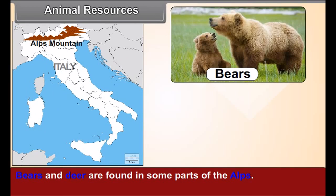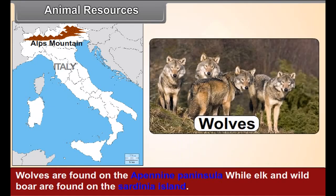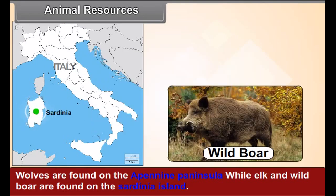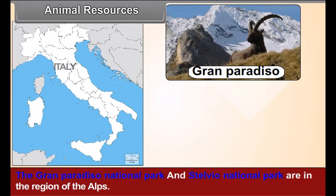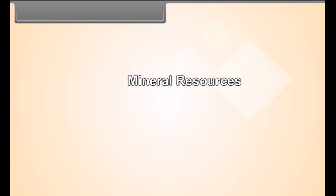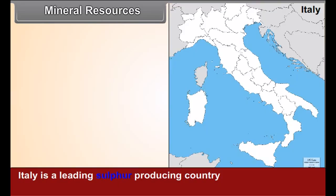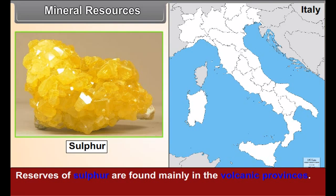Animal resources: bears and deer are found in some parts of the Alps. Wolves are found on the Apennine peninsula, while elk and wild boar are found on Sardinia Island. The Grand Paradiso National Park and Stelvio National Park are in the region of the Alps. Dolphins and different types of fish are found in the coastal areas.